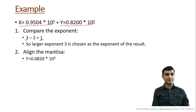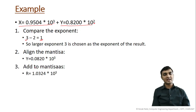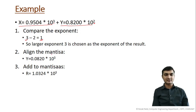The next step is to align the mantissa. To do this, we right-shift the number 0.8200, giving 0.0820 multiplied by 10 raised to 3. Now both numbers have the same power. Originally we had 0.82 times 10 raised to 2, but after aligning we have 0.0820 times 10 raised to 3, matching the other number's exponent.